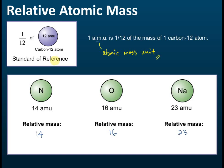To summarize: relative atomic mass is the relative mass of an atom — that's the first thing to know. Second, for every relative mass we must have a standard of reference, and that standard reference is 1/12 of the mass of a carbon-12 atom, which equals 1 atomic mass unit (1 amu).